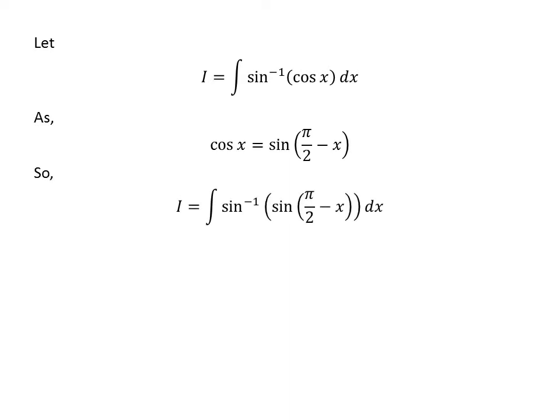So I is equal to the integration of arc sine of sine of (pi/2 minus x) with respect to x. As we know, the inverse of a function f of f(x) is equal to x. Since arc sine is the inverse of the sine function, arc sine of sine of (pi/2 minus x) is equal to pi/2 minus x.